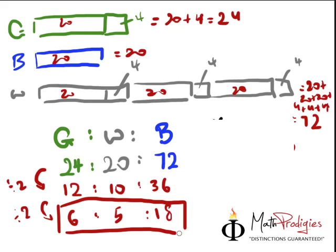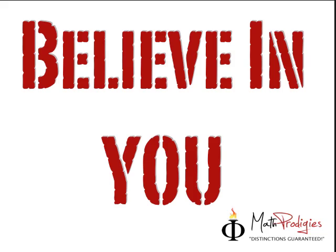If you got that right, I'm super impressed — I'm going to give you a big high five right now. You are a math prodigy, good job! Ratio is not very difficult. All you have to do is lay it out in this format: twenty-four to twenty to seventy-two, and then lower it down to the lowest terms — divide until you can't divide anymore. I want to leave you with the quote of the week: believe in you. I believe in you, and you are going to get an A-star and an A in math. You are a math prodigy, good job!